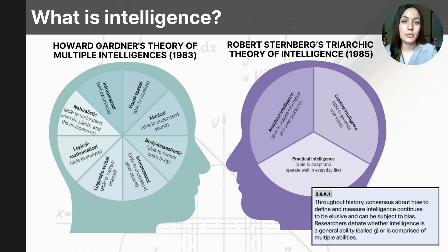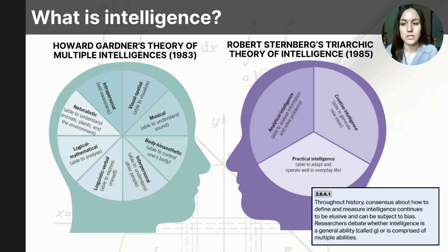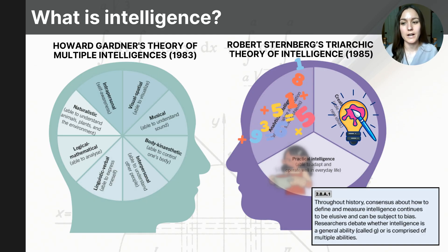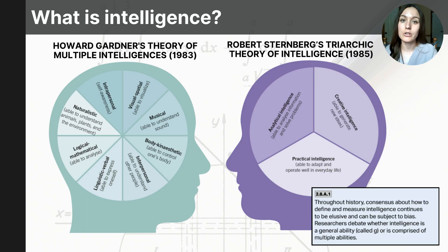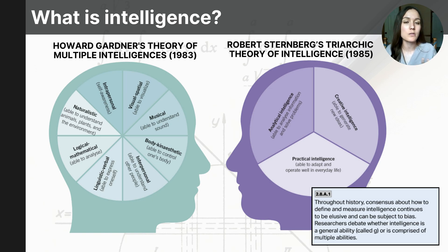Sternberg simplified intelligence into three independent components. He believed there were three intelligences: analytical, creative, and practical. Both Howard Gardner and Robert Sternberg agree that intelligence is made up of multiple independent factors that can be independent of one another, rather than just one central general intelligence.